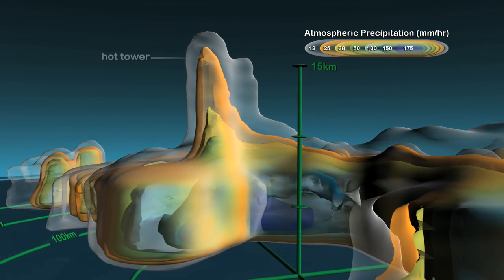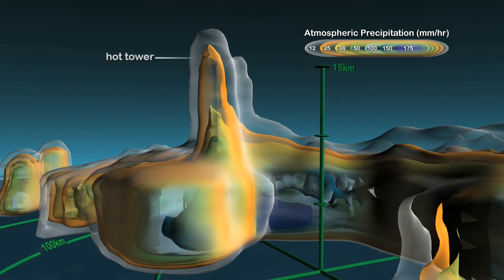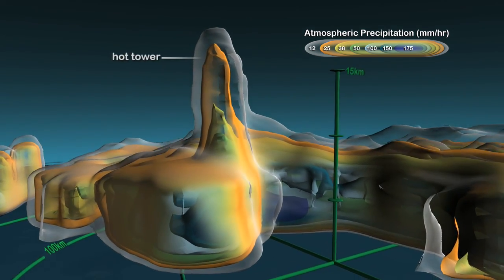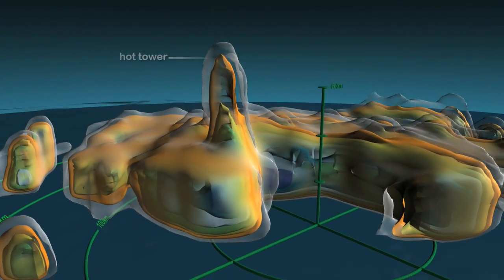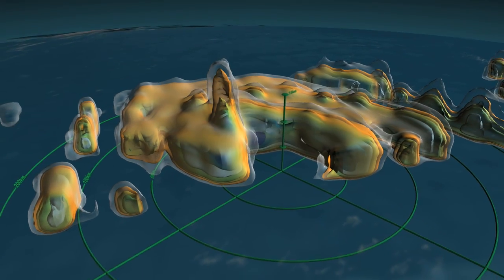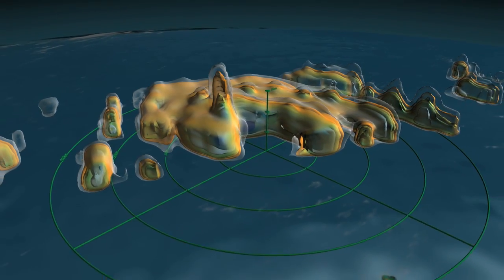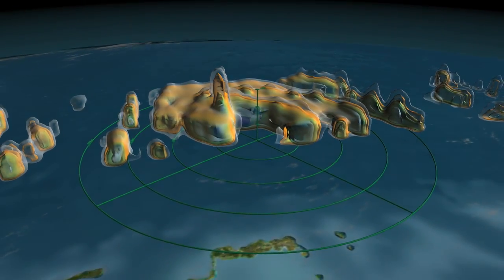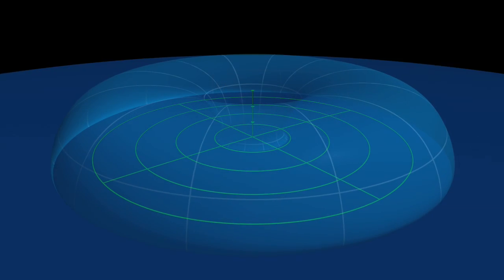These structures, called hot towers, extended higher than commercial jets fly. Research into these observations has led scientists to new insights about hurricanes. Let's look at the role hot towers play in hurricanes.